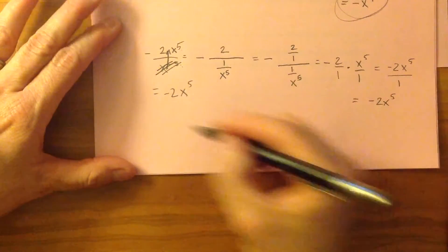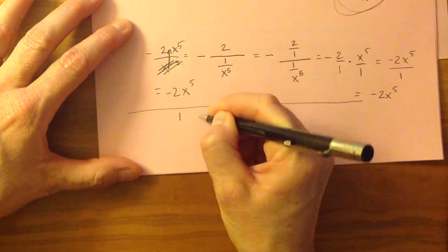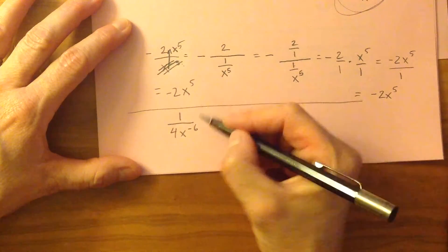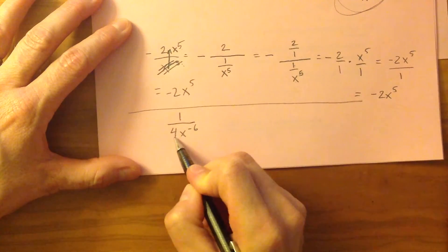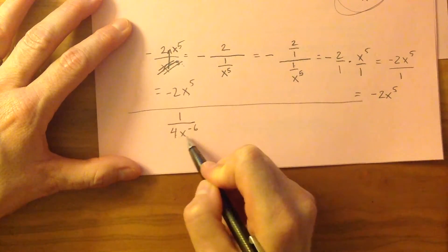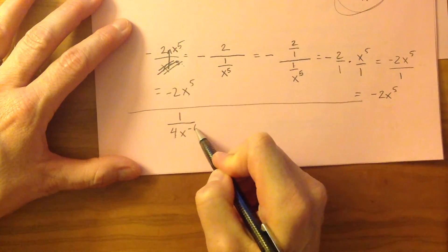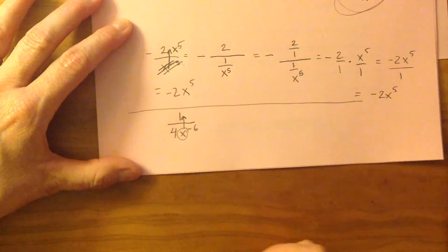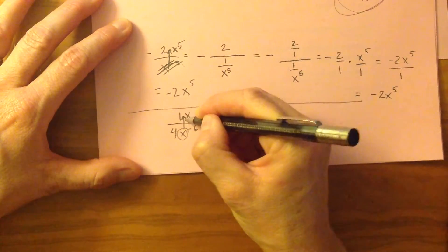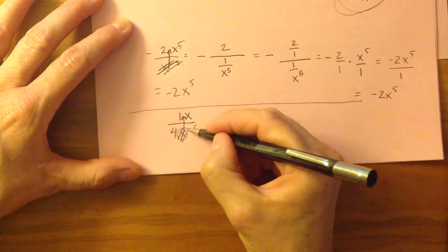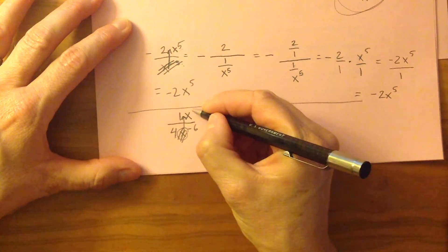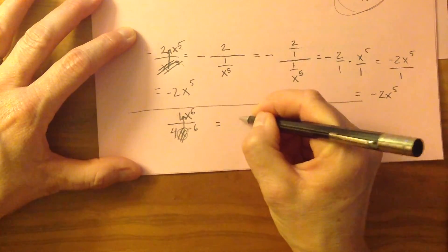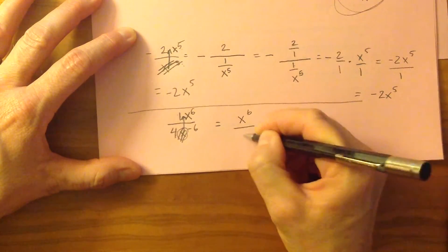Let's do one last one using the shortcut: 1 over 4x to the negative 6. This 4 doesn't have a negative exponent attached to it, so it's going to stay right where it is. x to the negative 6 — this x is being raised to a negative exponent, so I'm going to take this x and move it up to the numerator. Instead of its power being negative 6, it's going to be a power of positive 6. So this ends up being x to the 6 divided by 4.